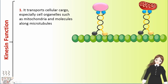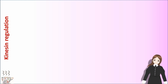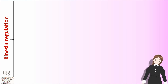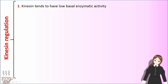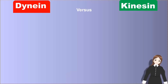Kinesin function. It transports cellular cargo, especially cell organelles such as mitochondria and molecules along microtubules. It supports several cellular functions including mitosis and meiosis. Kinesin regulation: kinesin tends to have low basal enzymatic activity. Kinesin can be inhibited by the binding to cargo adapters or cargo-associated proteins.